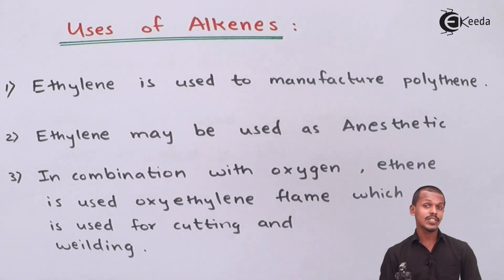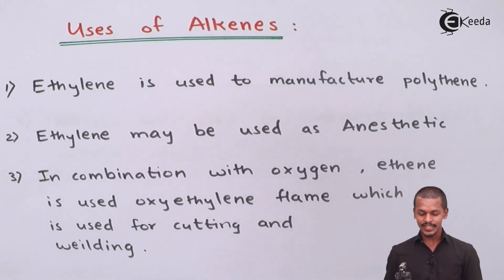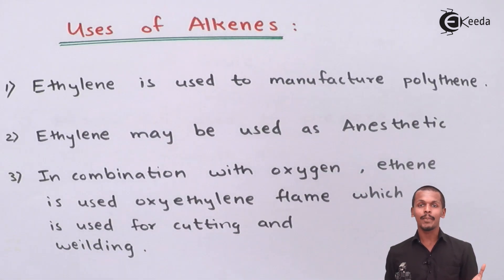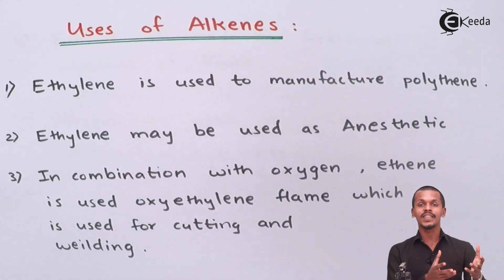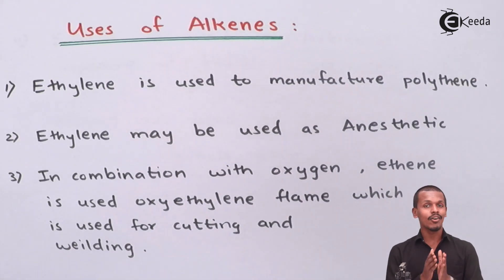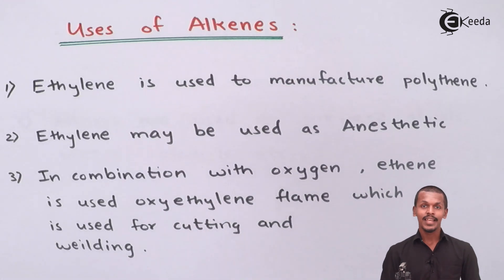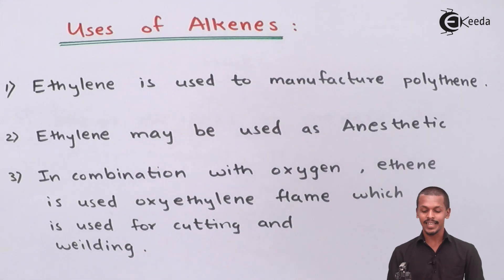Talking about the first use: ethylene, an alkene known as ethene, is used to manufacture polythene through the polymerization process, which we have also discussed in the chemical properties of alkenes. Polythene is used in making plastic bags, chairs, and pipes.